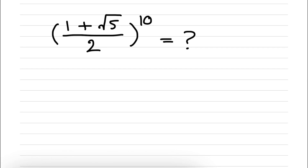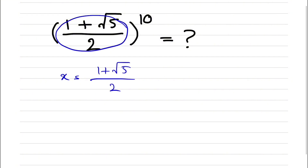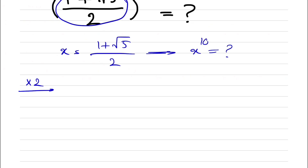Welcome back. In today's video we are breaking down another challenging question where we have (1 + √5)/2 all to the power of 10, and we have to find the value of this. What we're going to do is call our base x, so (1 + √5)/2 = x. What we are interested in is x to the power of 10, which is what we have to figure out.